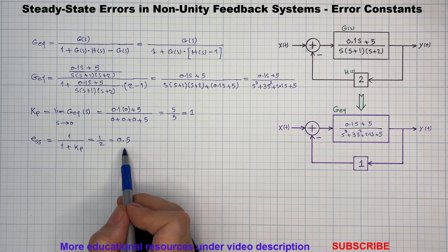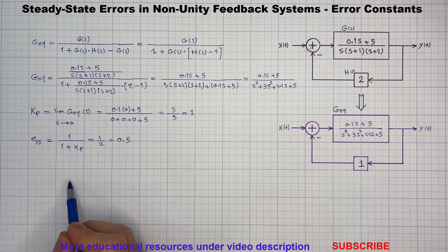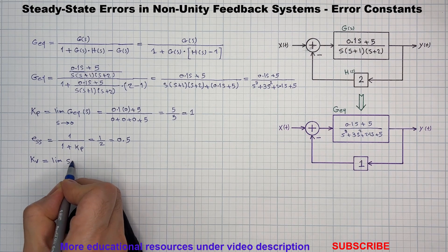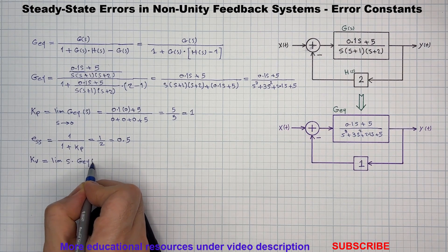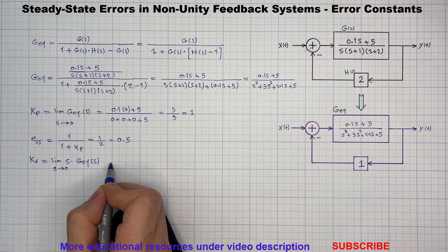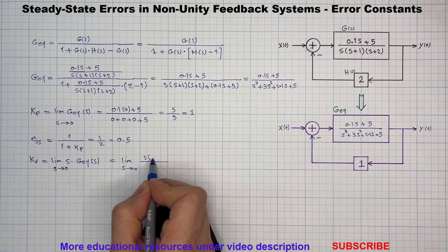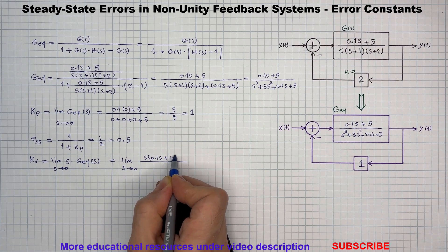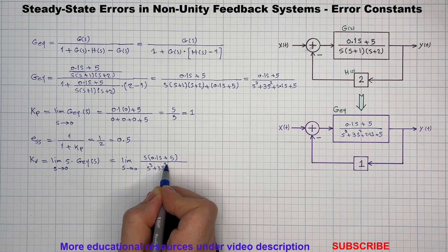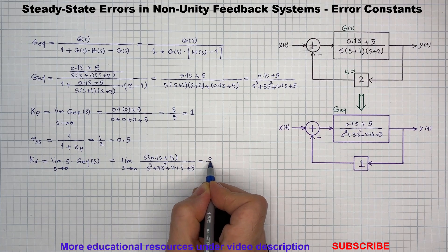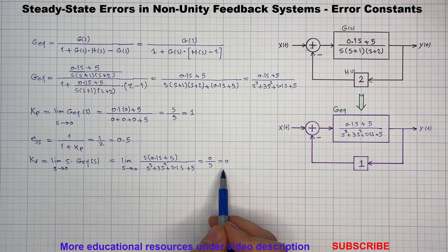So, a non-zero but finite error. Next, the velocity error constant Kv, used for ramp inputs. Plugging in, since the denominator becomes zero, we get zero for the velocity error constant Kv, and we will have a steady-state error of infinity.